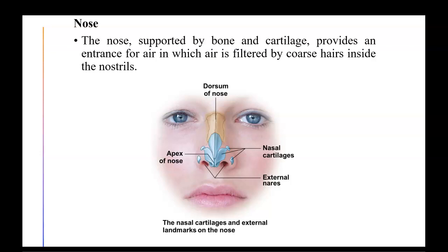The nasal dorsum on top is made of two nasal bones sutured together at the center. The apex and sides of the nose are made up of cartilage, specifically the nasal cartilage. The external nares are your nostrils.